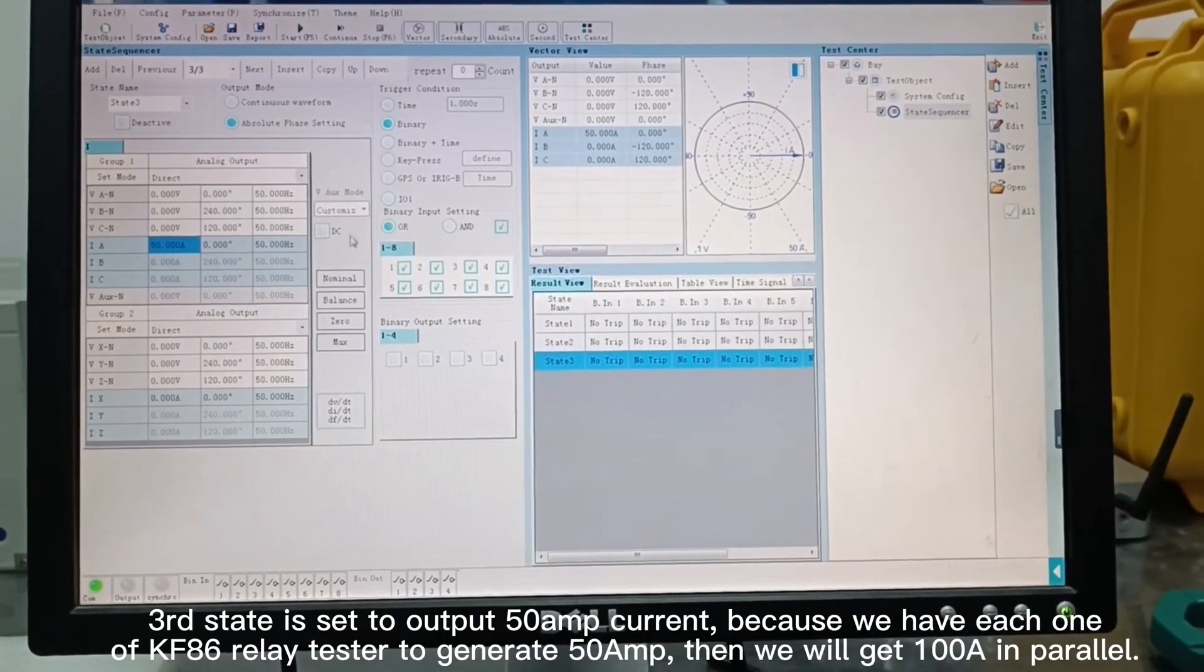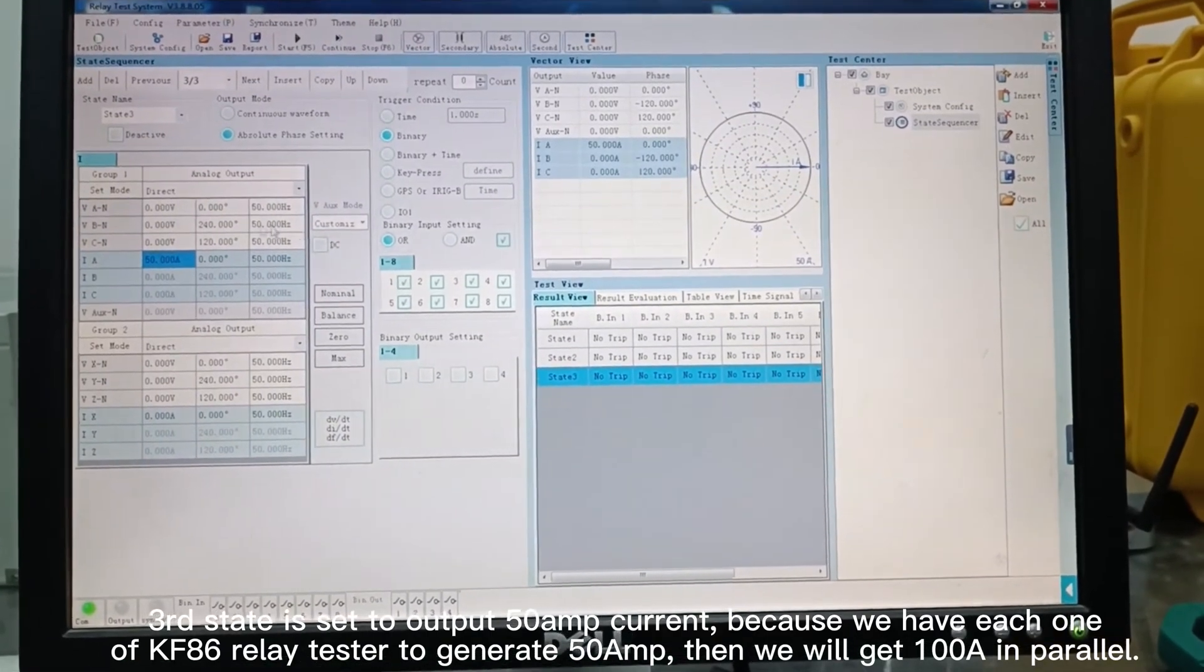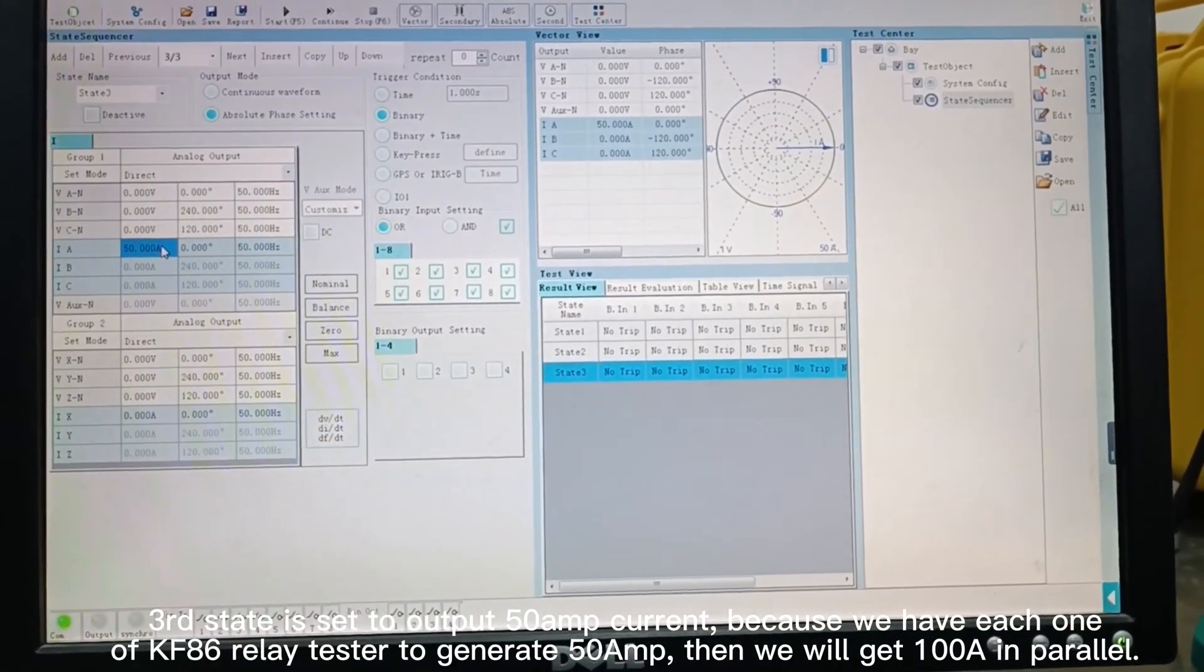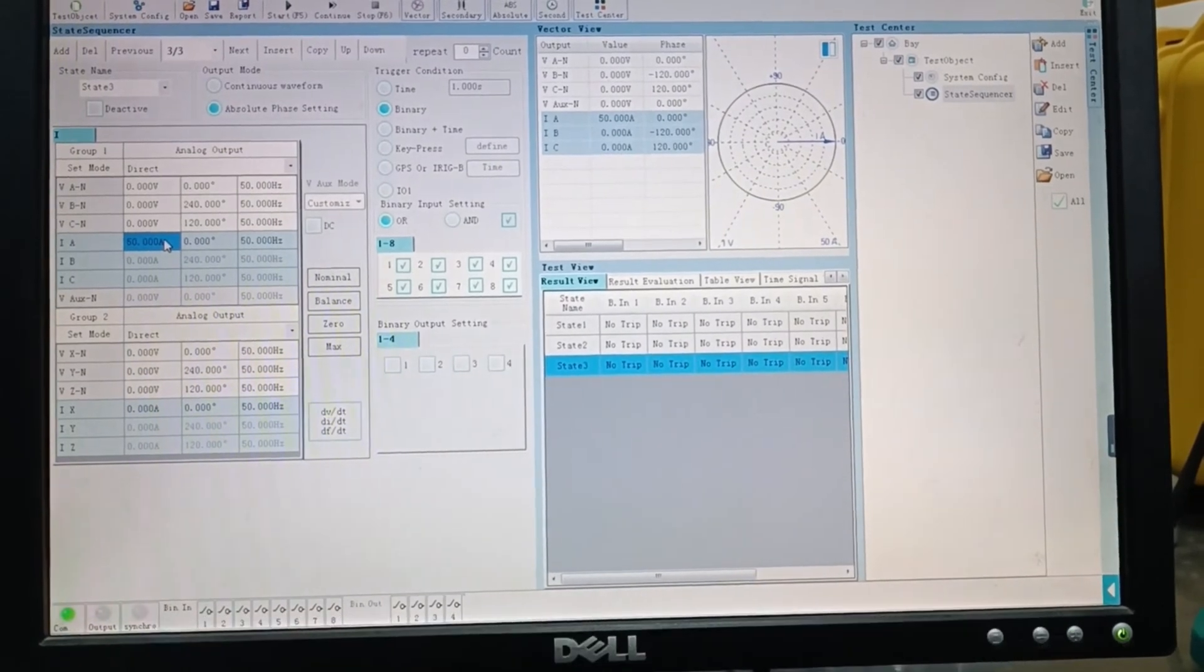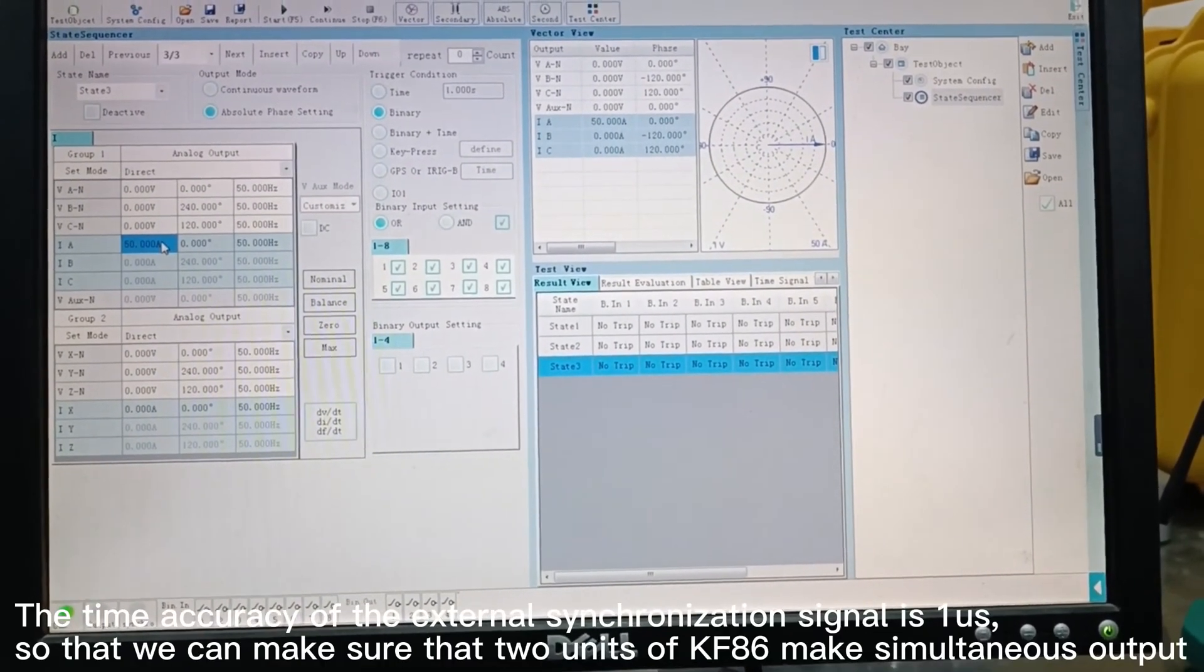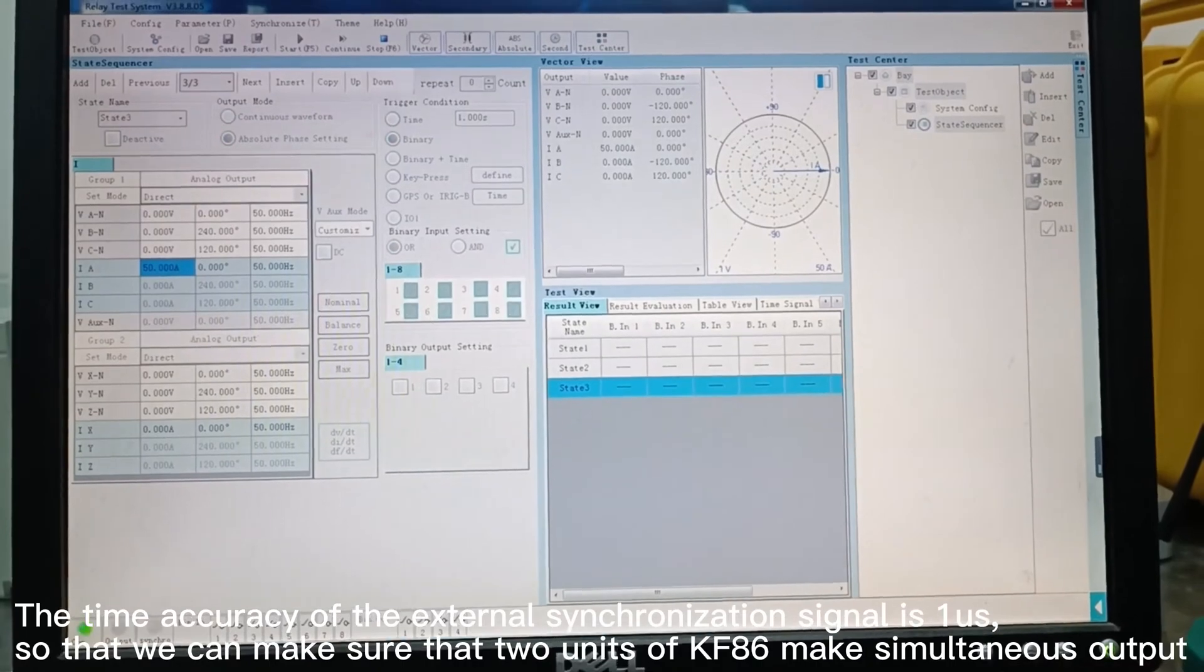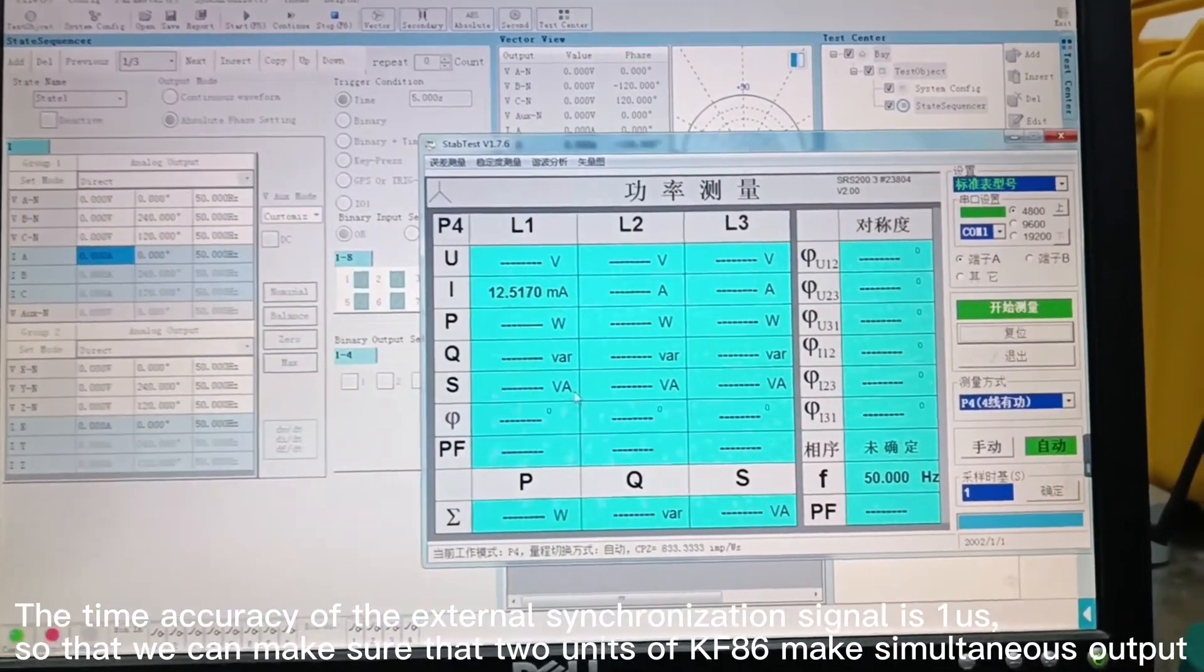Third state is set to output 50A current. Each KF86 relay tester generates 50A, then we will get 100A in parallel. The time accuracy of external synchronization signal is 1 microsecond, so we can ensure that the two units of KF86 make simultaneous output.